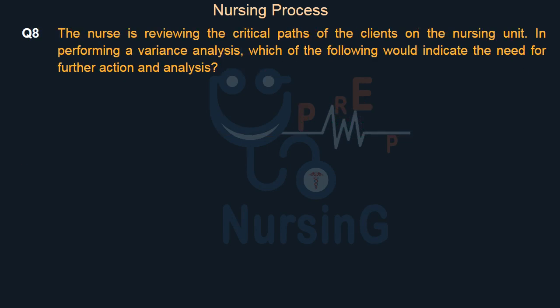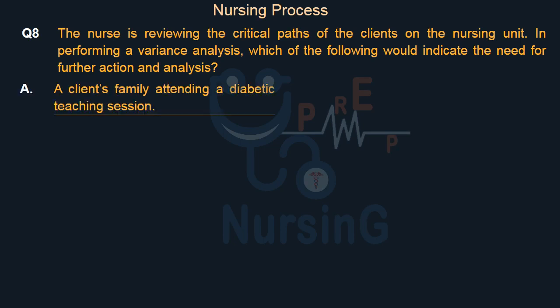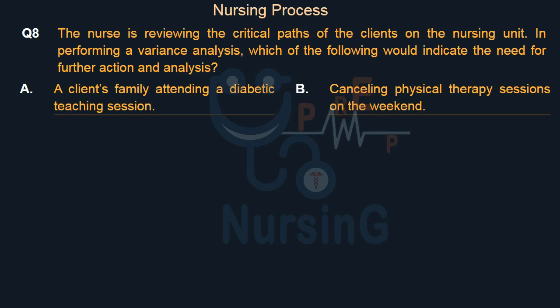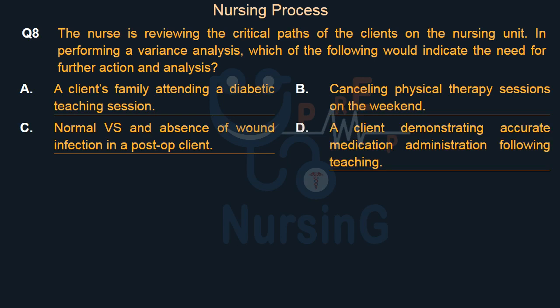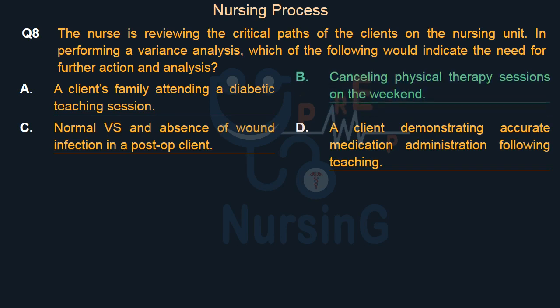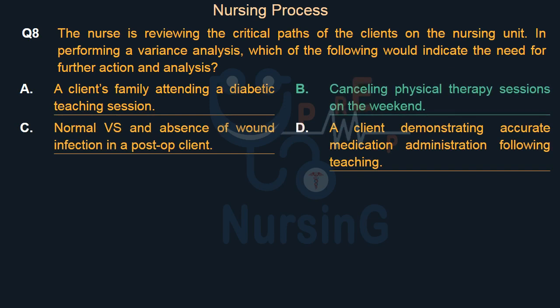The nurse is reviewing the critical paths of the clients on the nursing unit. In performing a variance analysis, which of the following would indicate the need for further action and analysis? Option A: A client's family attending a diabetic teaching session. Option B: Canceling physical therapy sessions on the weekend. Option C: Normal vitals and absence of wound infection in a post-op client. Option D: A client demonstrating accurate medication administration following teaching. Right answer is Option B: Canceling physical therapy sessions on the weekend.